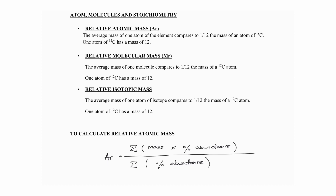Relative atomic mass is the average mass of an atom compared to one-twelfth of the mass of carbon-12. So we are using carbon-12 as the reference element. The word 'average' is very important — relative atomic mass is the average mass of the atom.